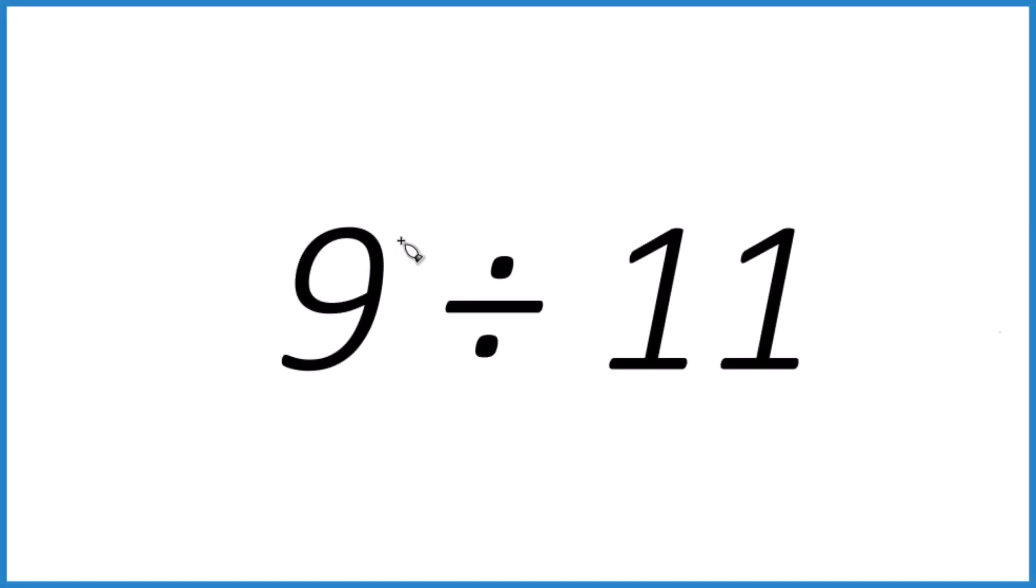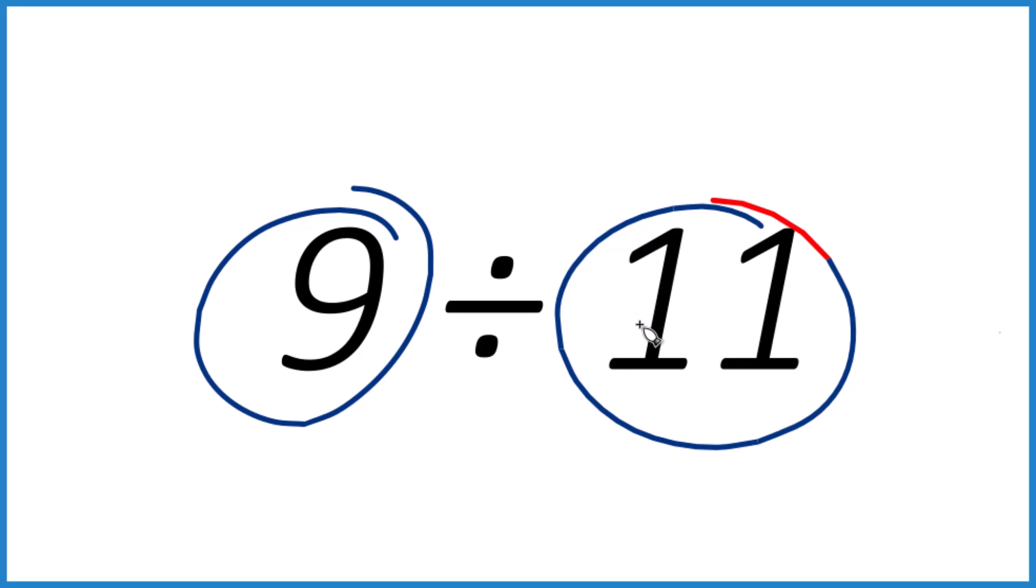This is Dr. B. Let's divide 9 by 11 using long division, and we're going to end up getting a repeating decimal. So here's how you do it.